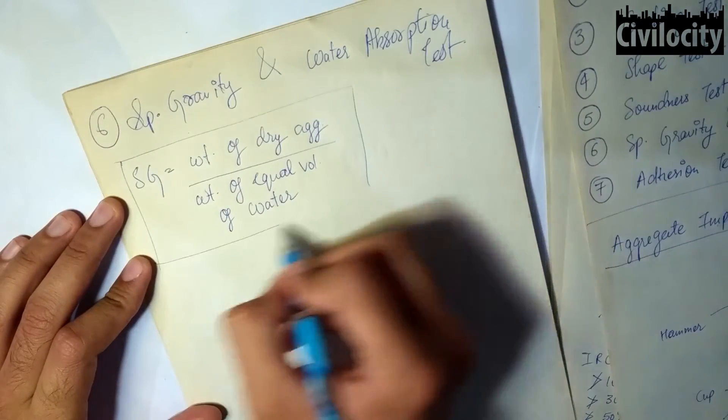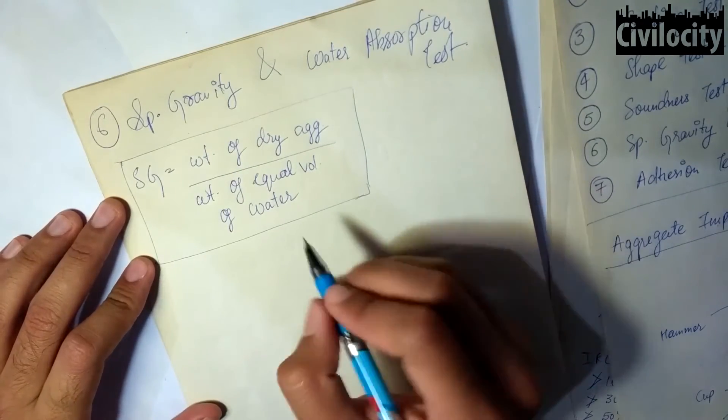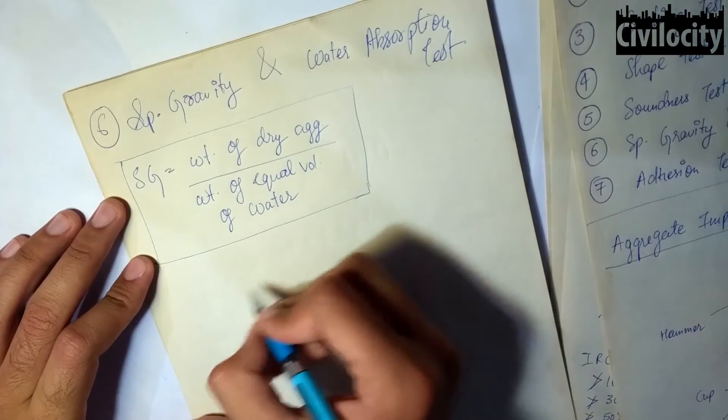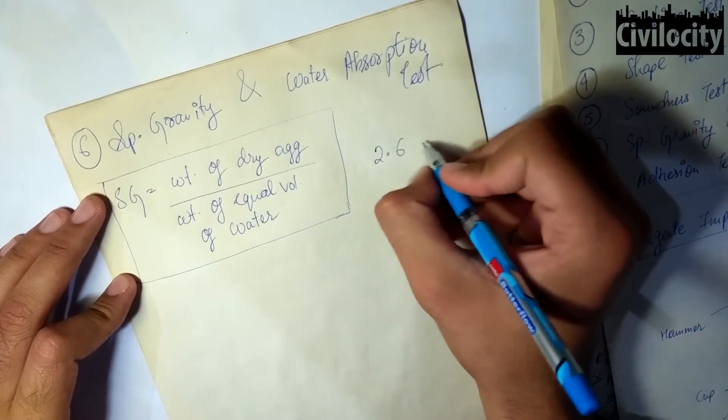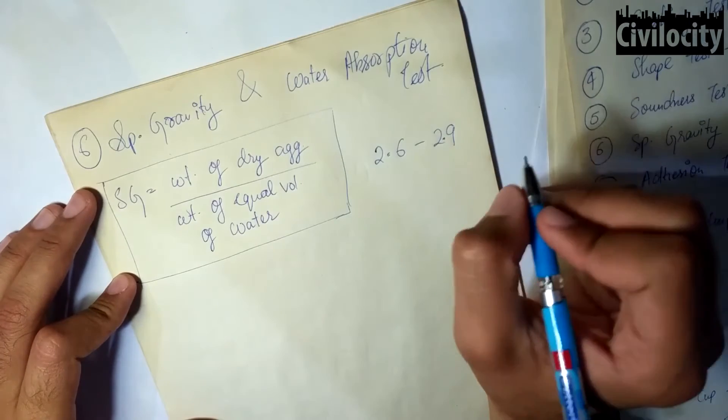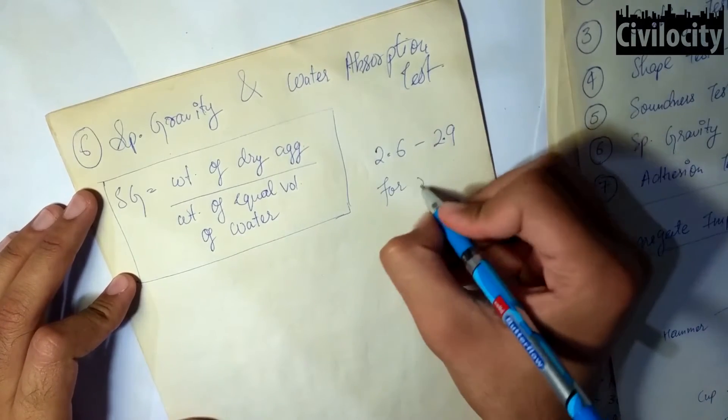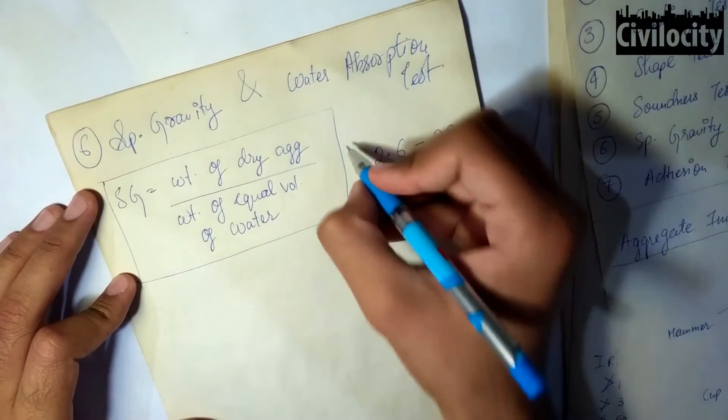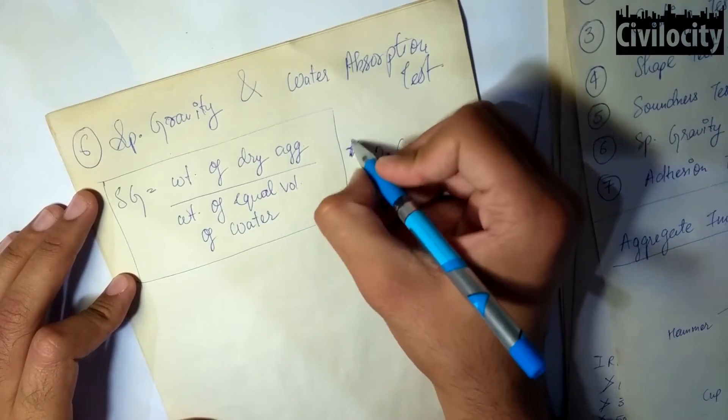This is the formula for specific gravity, and the value of specific gravity lies between 2.6 to 2.9 for rocks. This value is very important.